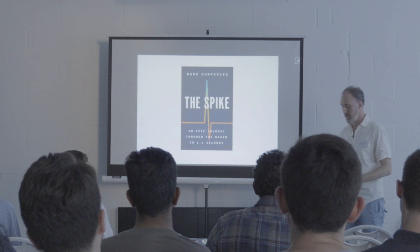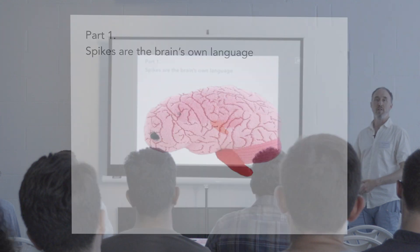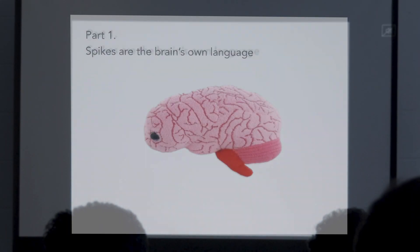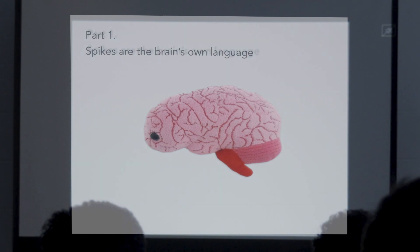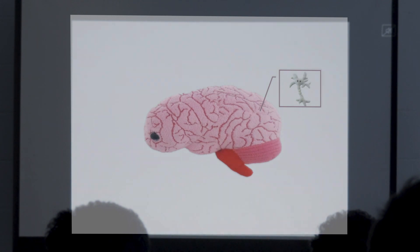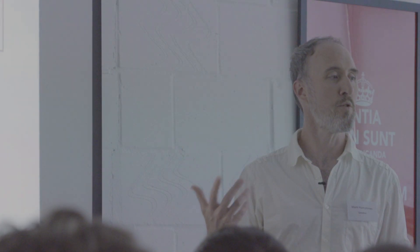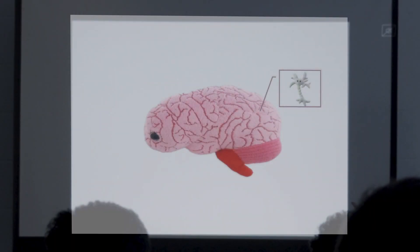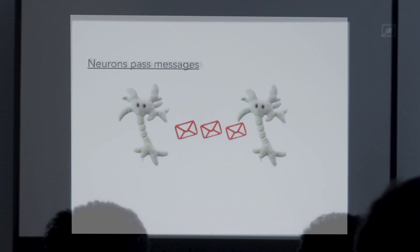Spikes are the brain's own language — the way neurons talk to each other. Your brain, roughly that shape but not that color, is full of neurons. The best estimate is about 86 billion neurons in your brain, about 17 billion of them in your cortex. Neurons pass messages to each other, and those messages are how you do anything — all your actions, all your thoughts, all your words.